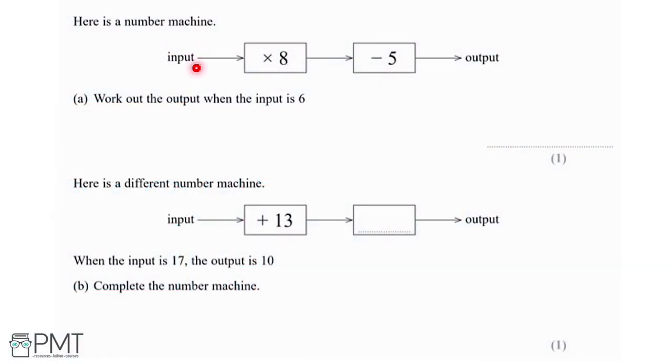Here's a number machine. We've got some input, then we multiply by 8, minus 5, and that gives our output. So we need to work out the output when the input is 6. We're starting with 6, then we go along here and we see we next multiply by 8, so I'm going to do that.